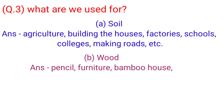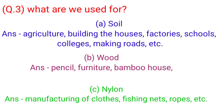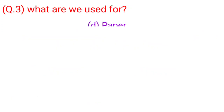B. Wood — Pencil, furniture, bamboo house. C. Nylon — Manufacturing clothes, fishing nets, ropes, etc.